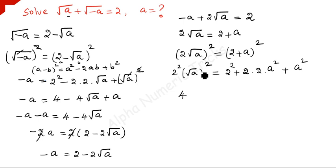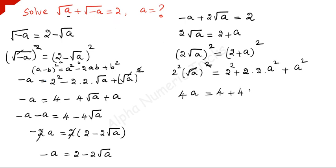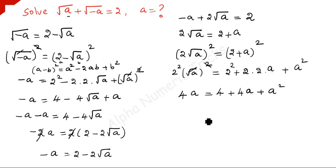The 2 times and the square root and a square cancel, giving 4a equals 4 plus 4a plus a squared. Take 4a to the other side: 4a minus 4a is 0, so we have a squared plus 4 equals 0.